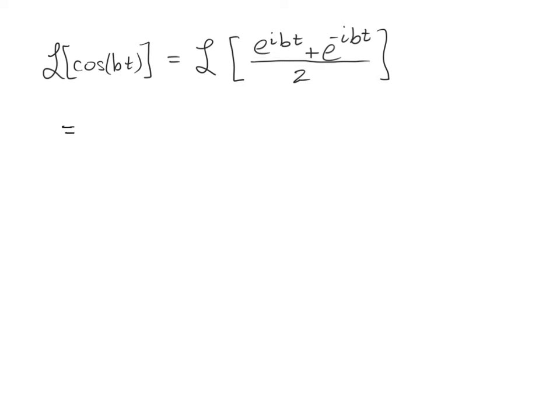So when we do this, we're going to have one half of the sum of the two individual Laplace transforms. E to the IBT plus one half Laplace transform of E to the negative IBT.